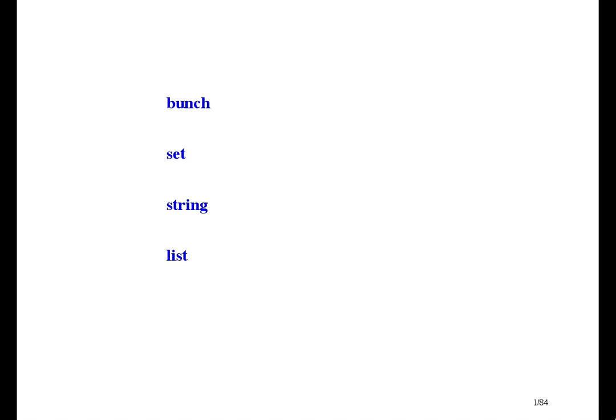There's just two data structuring principles here, namely packaging and indexing. The bunch is the simplest structure there is. It's unpackaged and unindexed. The set is packaged but not indexed. The string is indexed but not packaged. And the list is both packaged and indexed.